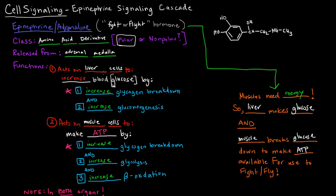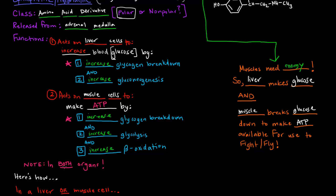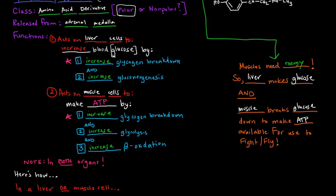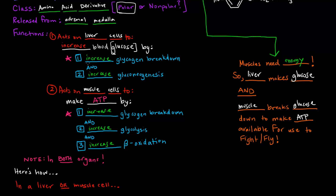Your liver is triggered by epinephrine to make glucose that your muscles can use, and once your muscles have that glucose they break it down for energy. Notice there's a commonality between these functions: in both the liver and the muscle cells, we have increased glycogen breakdown. So how exactly is glycogen breakdown triggered by epinephrine in a liver or muscle cell?